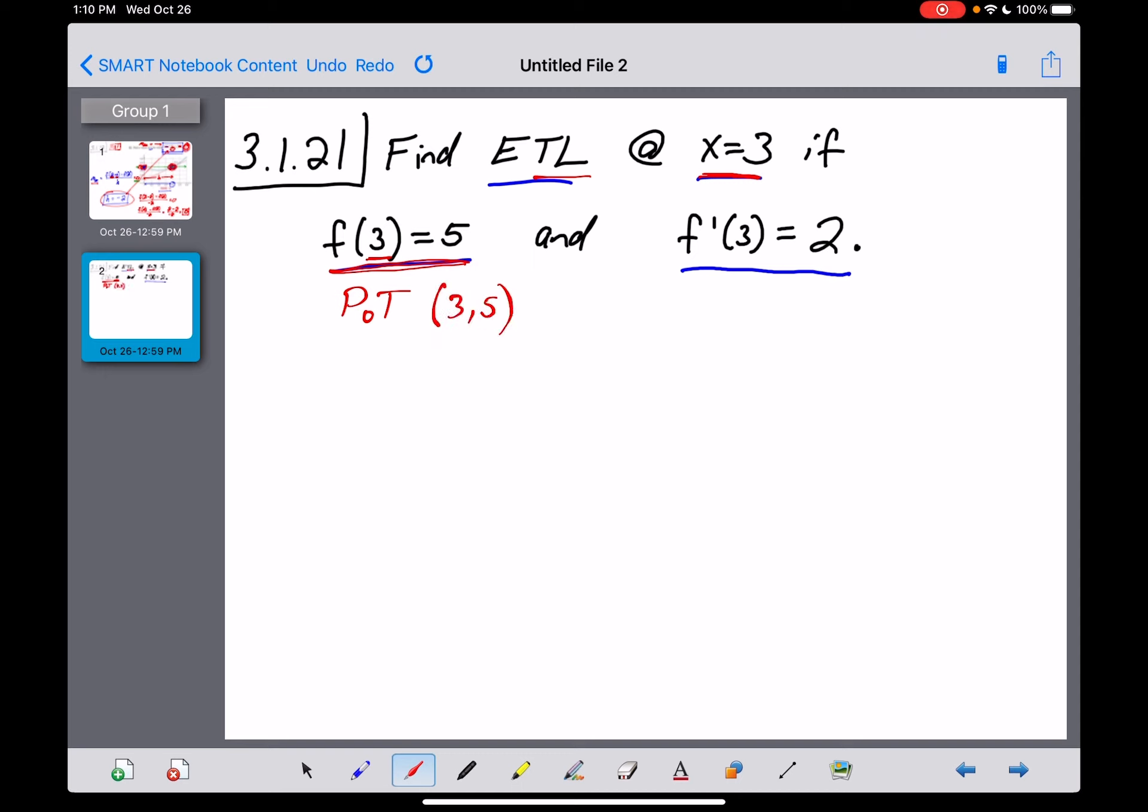Now, the second piece of information they give you is the value of your derivative at that spot where x is equal to 3. And what use is the value of the derivative to us? That tells us the slope of our tangent line is going to be positive 2.